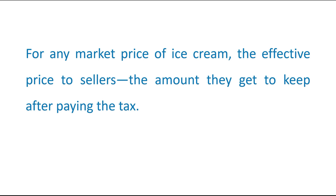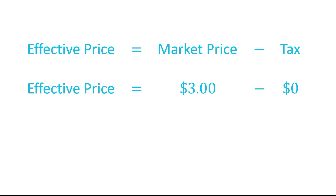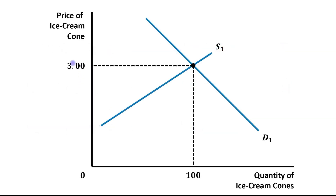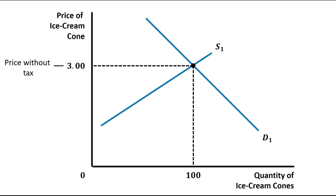For any market price of ice cream, the effective price to sellers is the amount they get to keep after paying the tax. In other words, the effective price received by sellers equals market price minus taxes paid. Right now market price is $3 and there are no taxes, so the effective price received by the seller is $3 — this is the price without tax. Now suppose the government imposes a $0.50 tax on sellers. The supply curve shifts leftward from S1 to S2.